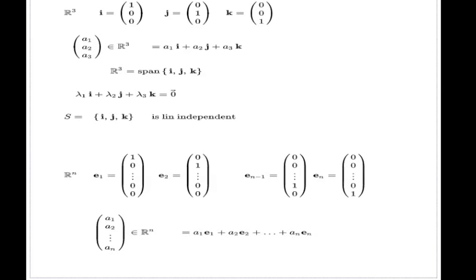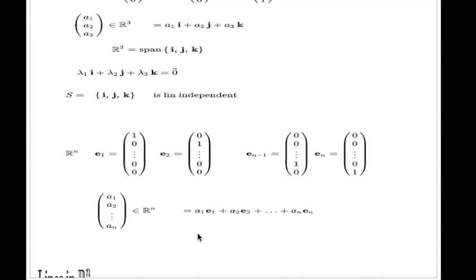And you can argue similarly, like in here, that it turns out that your Rn, and I don't think I have it on my slide, so I'll just print it right here, you can argue similarly that the Rn is a span of this N vectors E1, E1, E sub N.